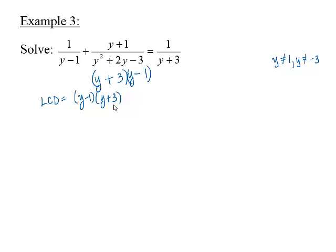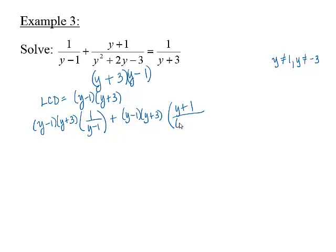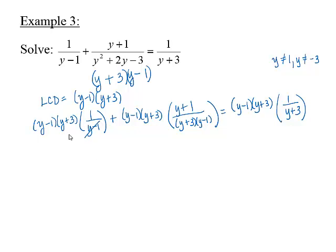Multiplying each side of the equation by the LCD and distributing to each term, we get (y − 1)(y + 3) times 1/(y − 1), plus (y − 1)(y + 3) times (y + 1)/[(y + 3)(y − 1)], equals (y − 1)(y + 3) times 1/(y + 3). Simplifying each product, we get (y + 3) plus (y + 1) equals (y − 1).